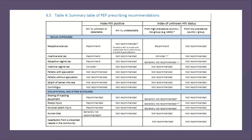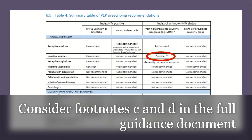In this scenario, the BASH summary table of PEP prescribing recommendations says to consider offering PEP — that's insertive anal sex with men who have sex with men, a higher risk group, where HIV status is unknown. The definition of 'consider' in these guidelines states the risk of HIV transmission is low, the risk-benefit balance of PEP is less clear, and the risk should be assessed on a case by case basis, taking into consideration factors shown in footnotes C and D, which are at the bottom of the table in the full BASH guidance document.